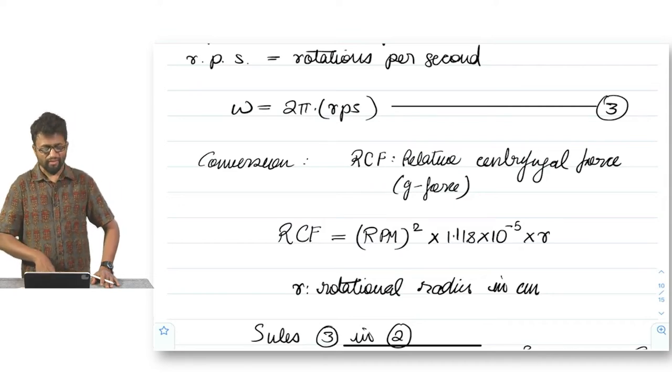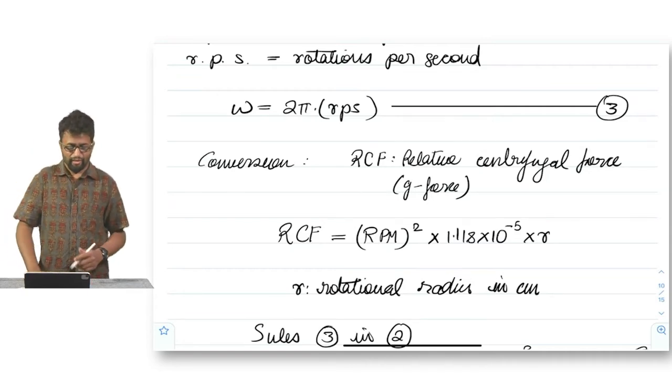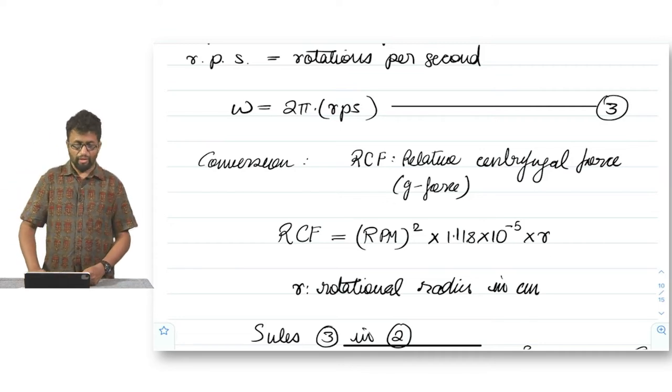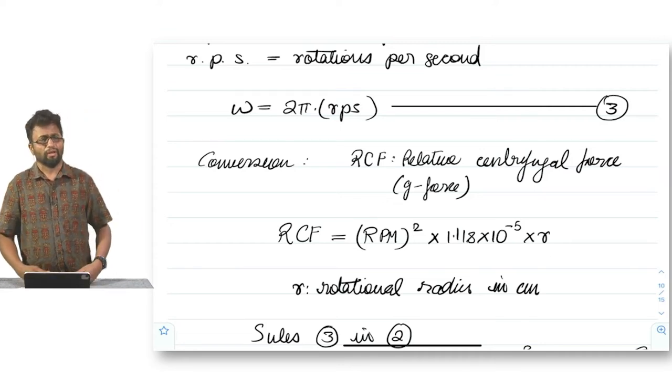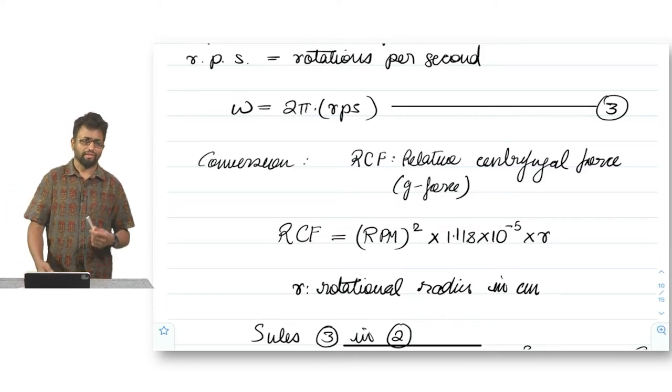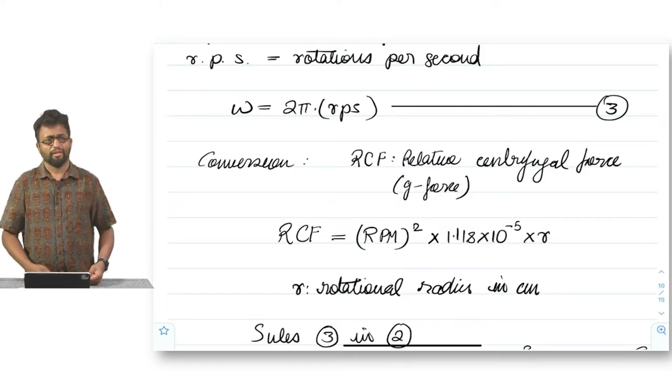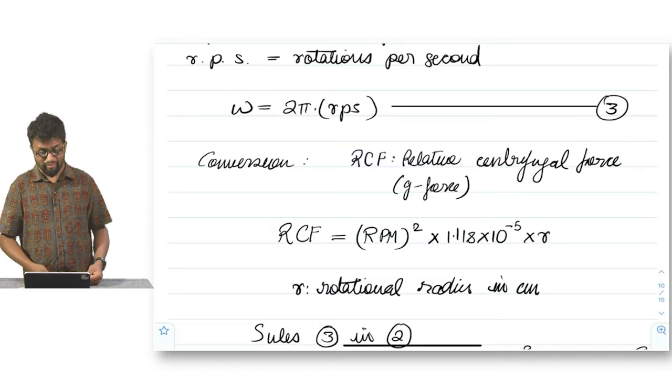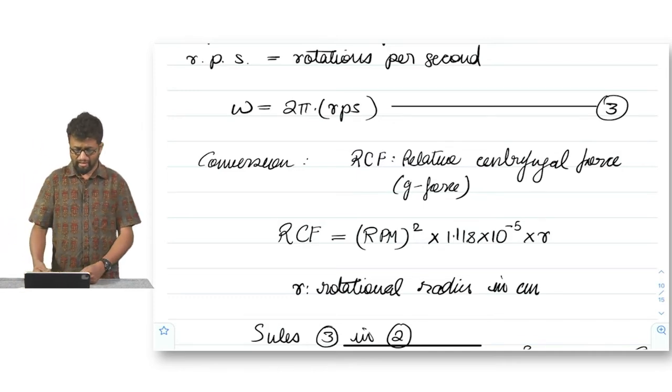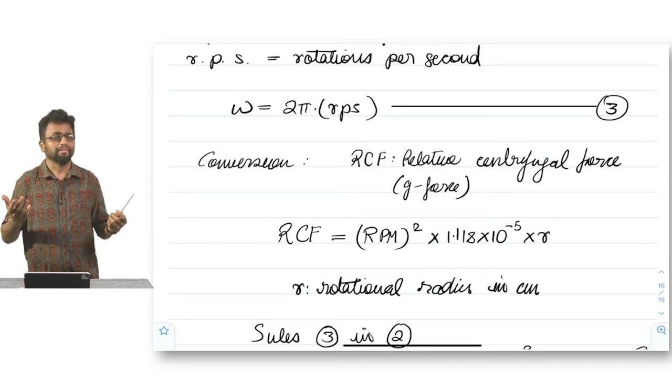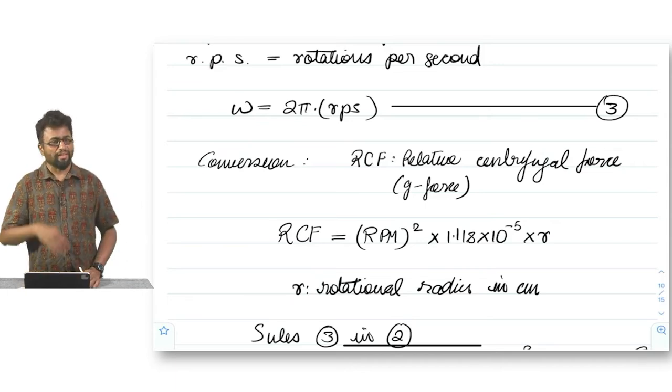So RPM stands for rotations per minute and RPS stands for rotations per second. This is kind of obvious answer. One is in terms of per unit minute and the other is in terms of per unit second, which means 1 RPM corresponds to 60 RPS obviously, right. Omega is equal to 2 pi into rotations per second. Now we want to know what is the conversion of this G, G factor, how many G's from RPM. So in order to do that, we need to equate RCF and RPM.